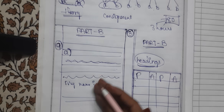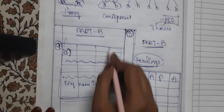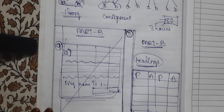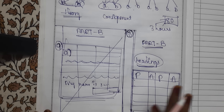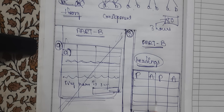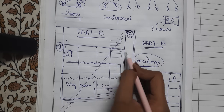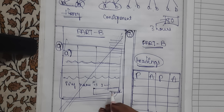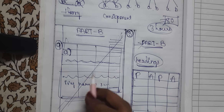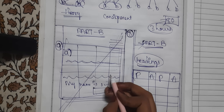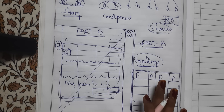While doing problems, recheck after completing each step rather than waiting until the end. If you find an error only at the end, you cannot redo the entire problem. Striking off and rewriting creates a bad impression on the examiner. Try to avoid mistakes by checking step by step. Also, manage time wisely — do Part B first, then Part A. If you cannot solve a problem, attempt the theory option instead, but do not leave any question blank.